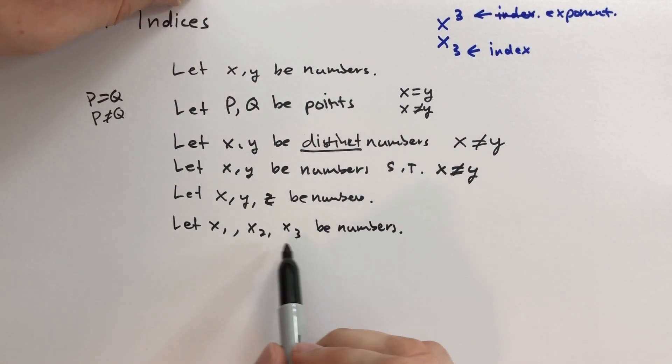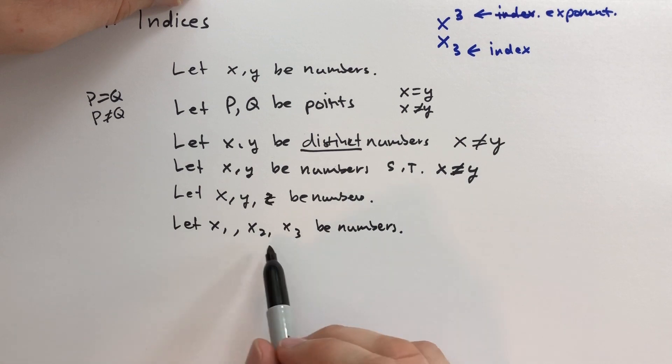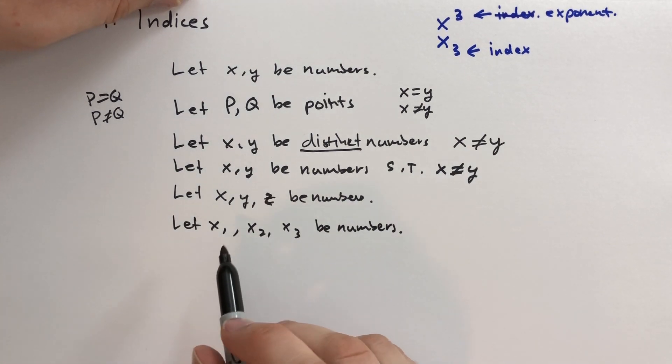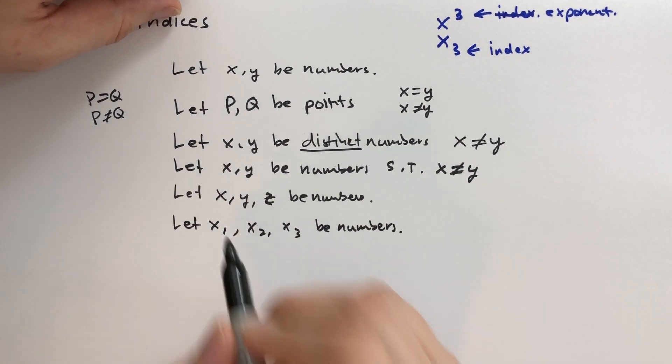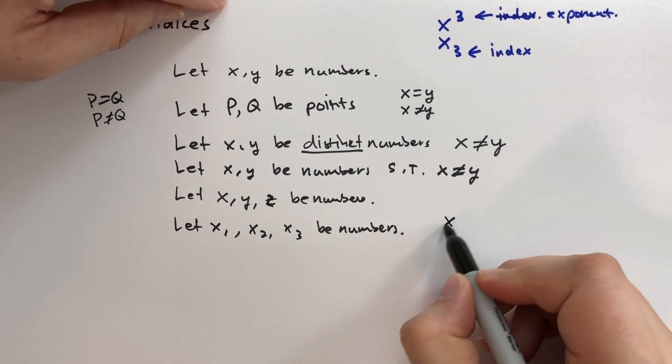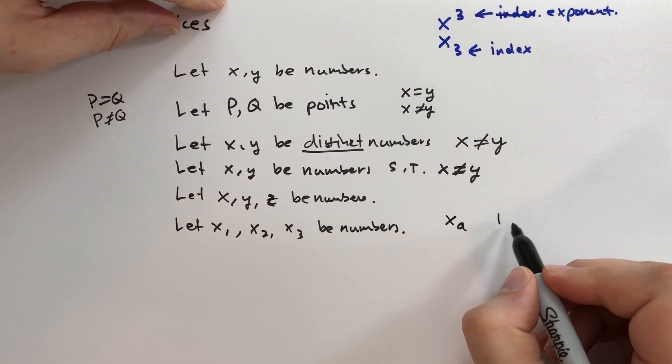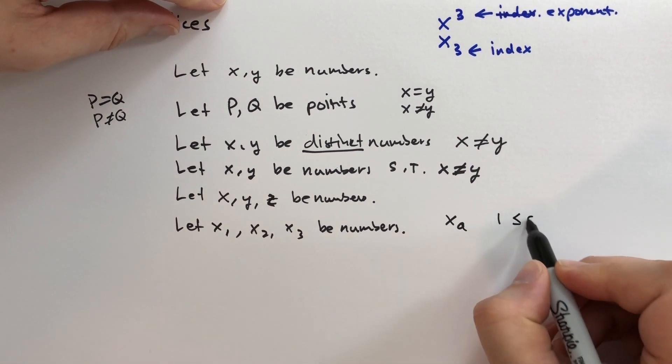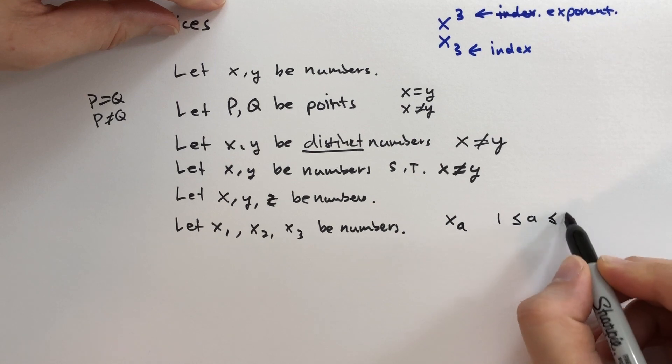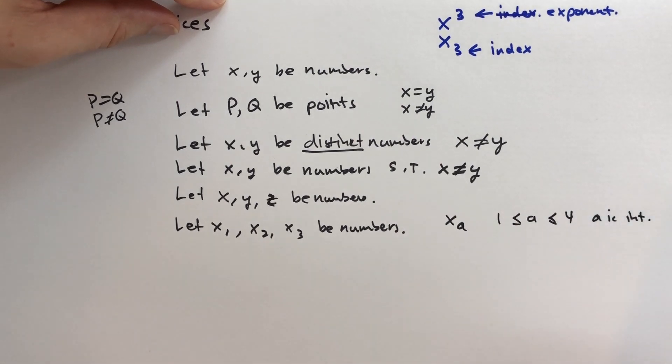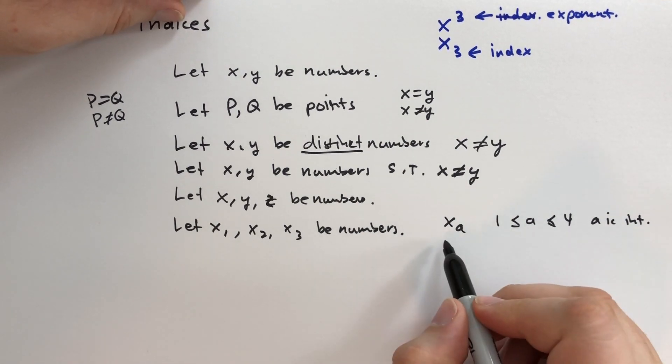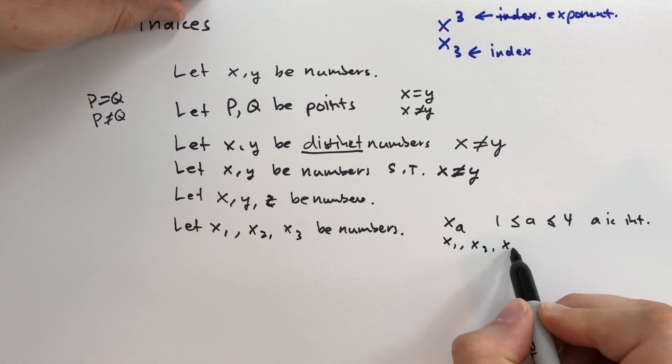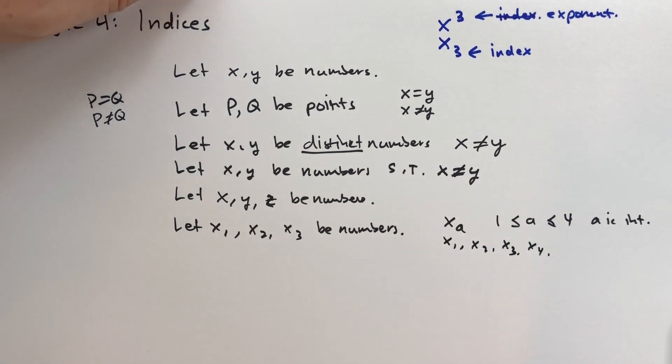So instead what we do is we say let x1, x2, x3 be numbers. Now, what does this say about the relationship of these three numbers? They could be the same, they could be different. These are just naming conventions. So when you see a subscript, it's just a new name, right? And you could put any kind of number down there. And you can even say like x sub a, where one is less than a is less than or equal to four, and a is an integer.